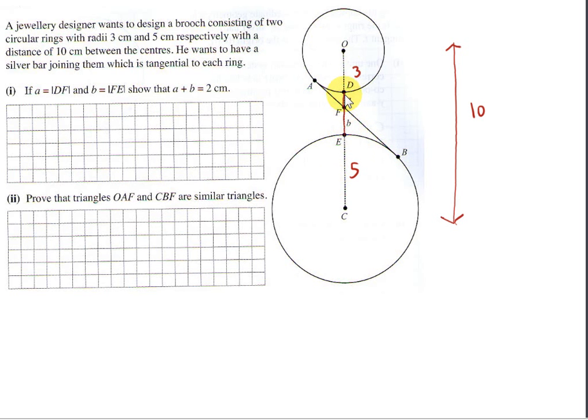To find the distance between D and E, we take the distance between the centers which is 10 and subtract off the two radii. Because line segments A and B lie on the line joining the centers of the two circles.